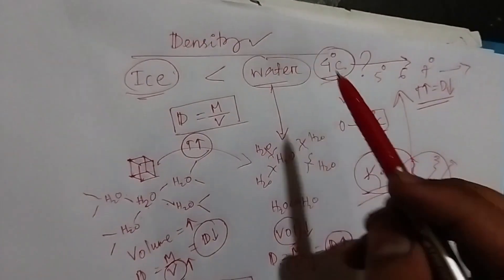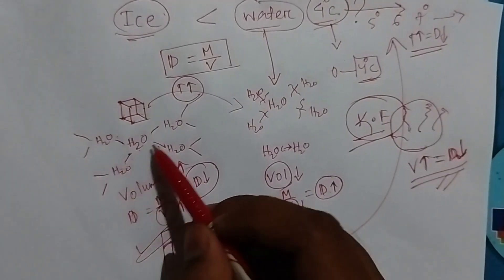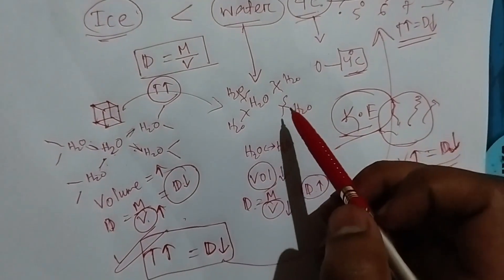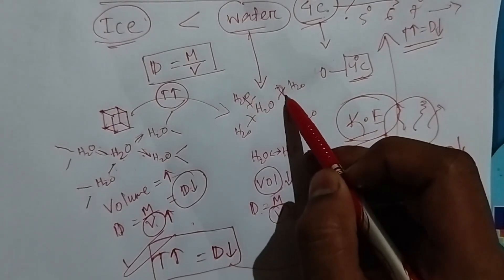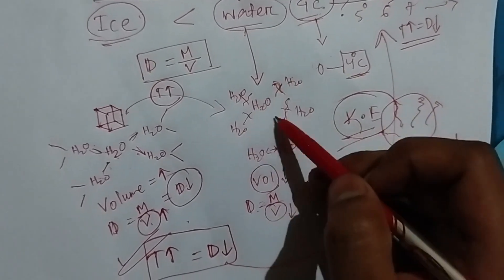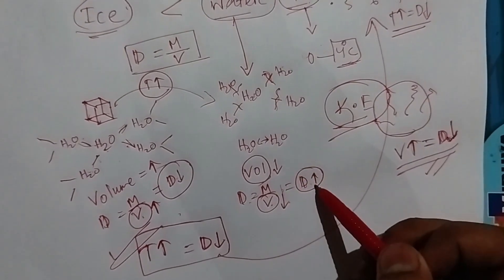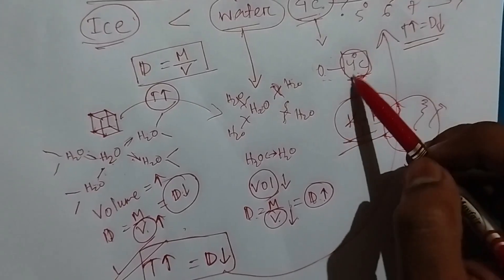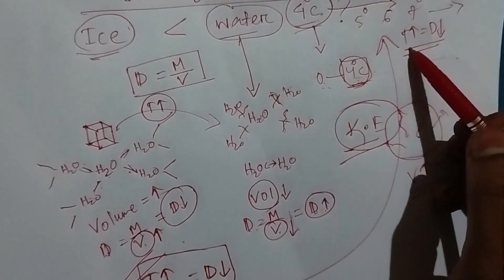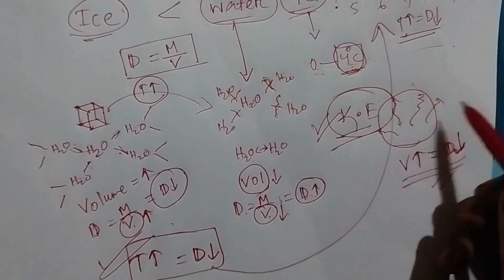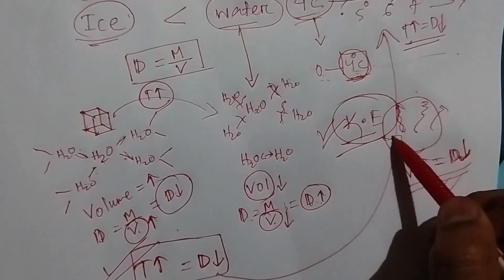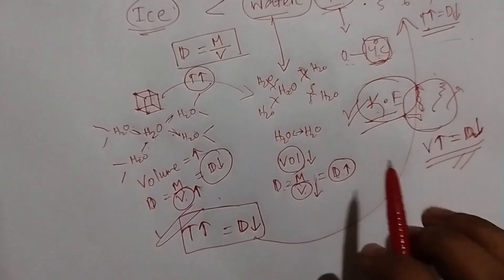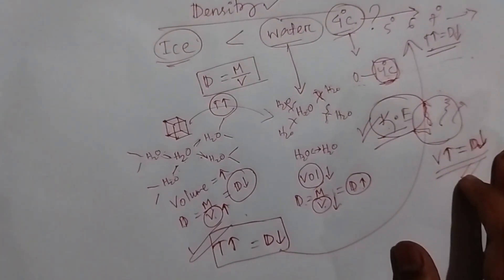To summarize: ice has a tetrahedral hydrogen-bonded structure, so its volume is more and density is less. In water, bonds break down, particles come nearer, volume declines, and density increases. From zero to four degrees Celsius, density increases and is maximum at four degrees Celsius. Above four degrees Celsius, kinetic energy causes particles to disperse, volume increases, and density declines.